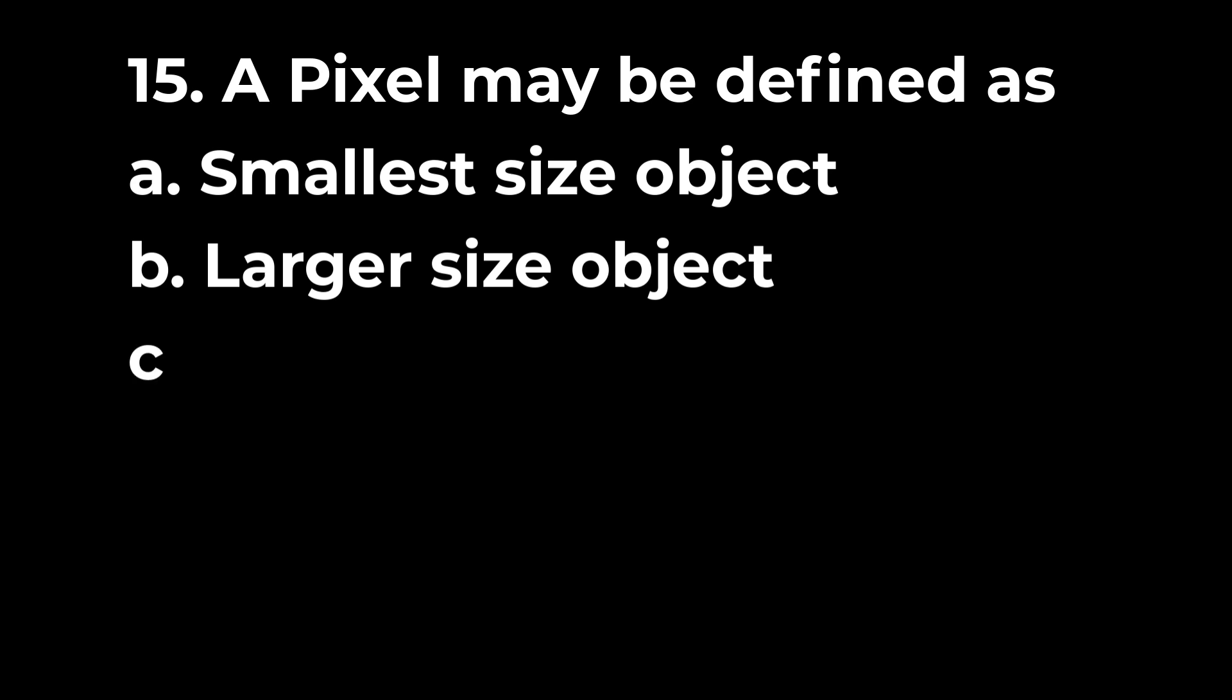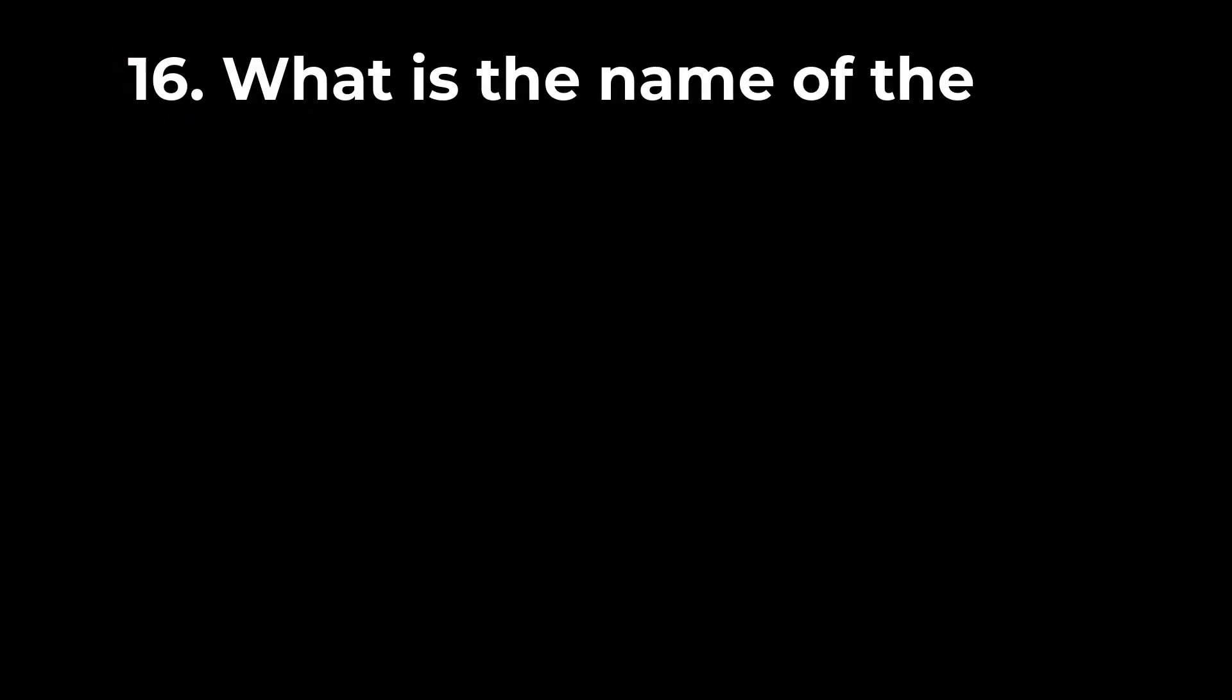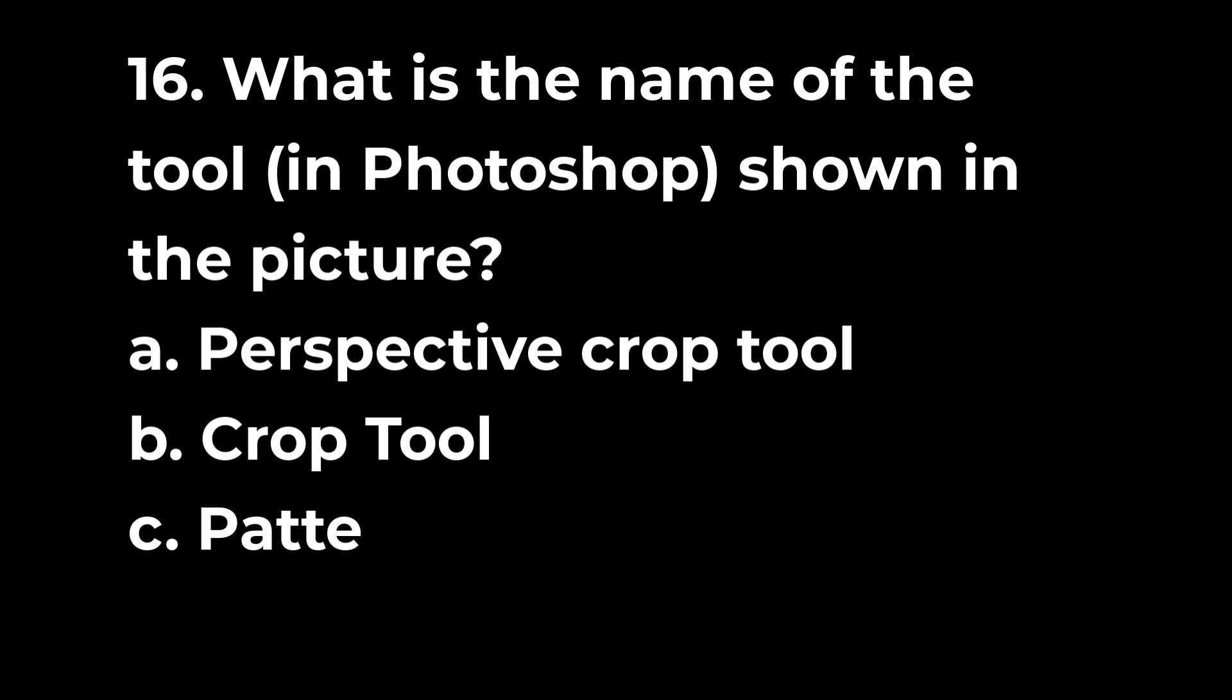Question 15: A pixel may be defined as a. Smallest size object b. Larger size object c. Medium size object d. None of these. Question 16: What is the name of the tool, in photoshop, shown in the picture? a. Perspective crop tool b. Crop tool c. Pattern stamp d. Clone stamp.